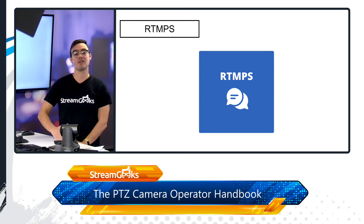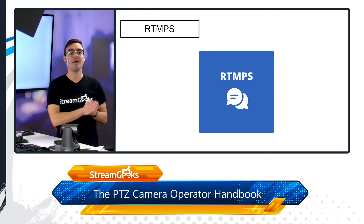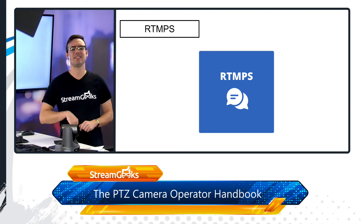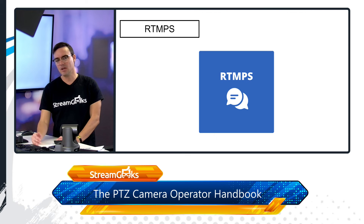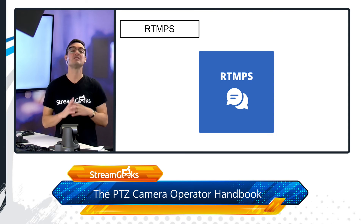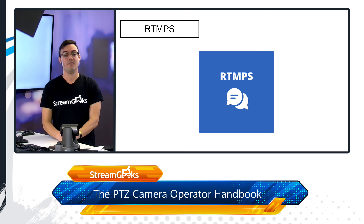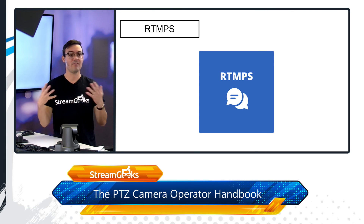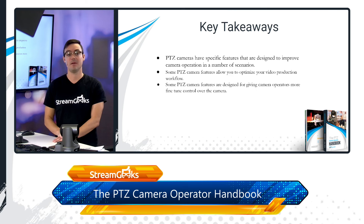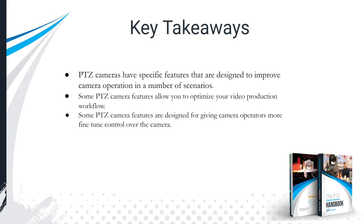RTMPS — if you're not familiar with RTMP yet, it stands for Real-Time Media Protocol. RTMPS is the new secure version now supported by Facebook and other content delivery networks. RTMP is really the standard for sending video to a content delivery network like YouTube or Facebook for live streaming. RTMPS is an important improvement that's more secure, so it's worth understanding when evaluating your PTZ camera's features.